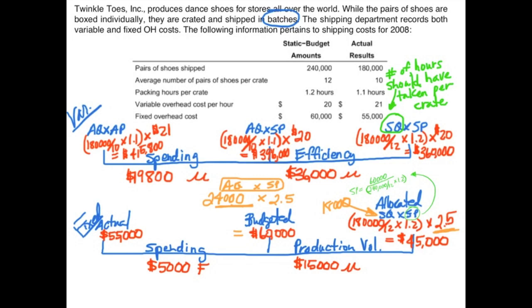The only difference between standard quantity and actual quantity is the production level — in this case, the number of shoes shipped. We shipped 180,000 pairs of shoes but planned to ship 240,000 pairs. Therefore, it's unfavorable because our production was less than anticipated.